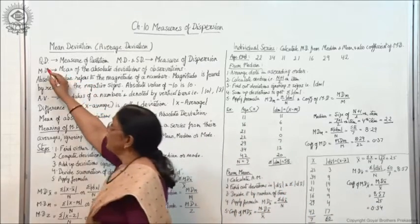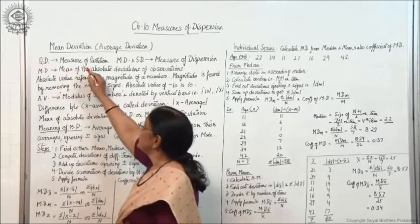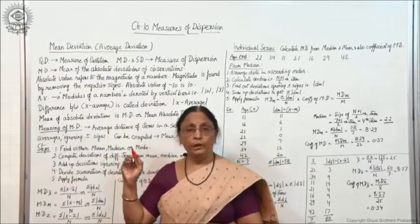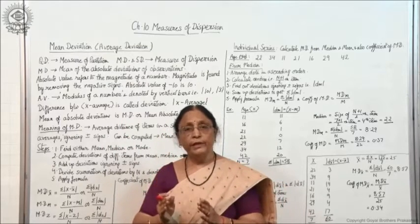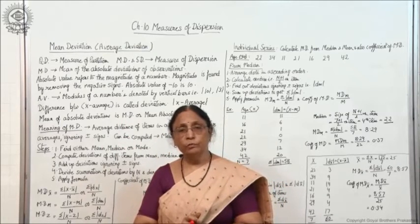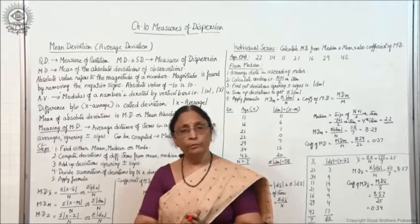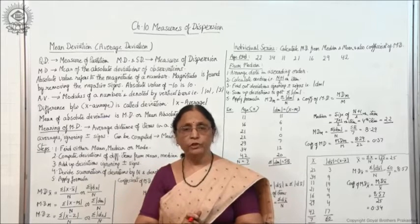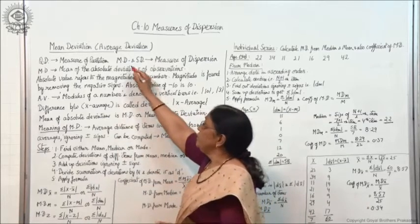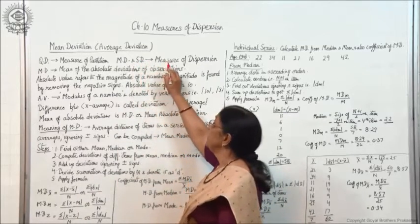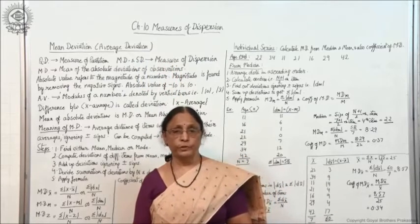Earlier you have done quartile deviation. Quartile deviation is a measure of partition — you were dividing the series into four parts, so that was giving you partition values. Whereas mean deviation and standard deviation are the actual measures of dispersion.